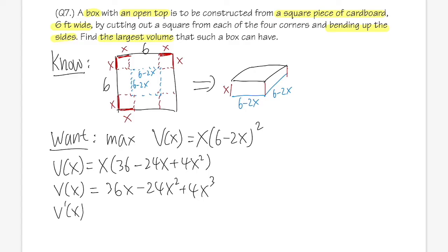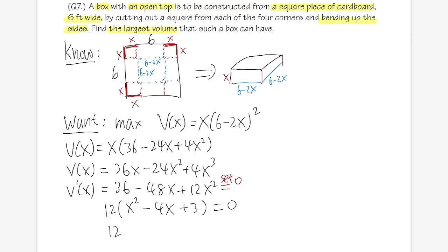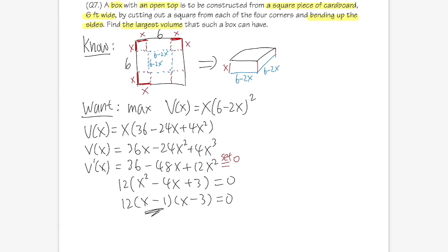Now we take the derivative: V'(x) = 36 minus 48x plus 12x². Set this equal to 0. We have a quadratic — factor out 12 to get x² minus 4x plus 3, which factors as (x minus 1)(x minus 3) equals 0.